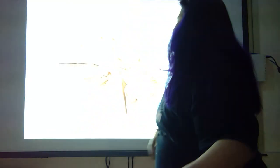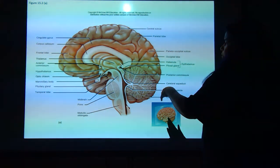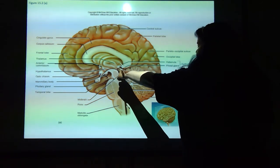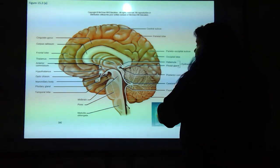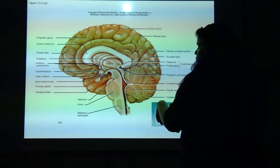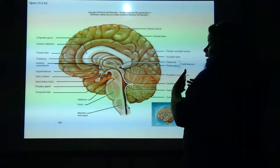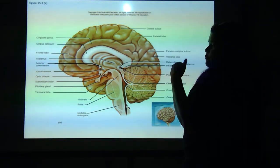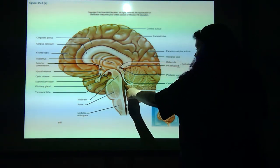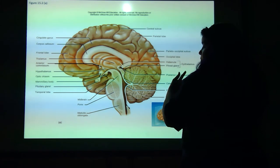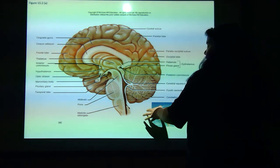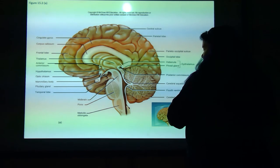So that's the pineal gland. The posterior commissure, the cerebral aqueduct, which is basically the connecting tube to the fourth ventricle — another space where cerebrospinal fluid is. And then this is the cerebellum back here.